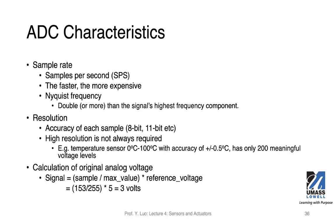When you have a sample and a reference voltage, you can use this formula to calculate the original voltage value. Let's say the sample is 153, and your max value from this ADC is 255, and your reference voltage is 5 volts. Then you can find out that the signal coming out of the sensor is 3 volts.